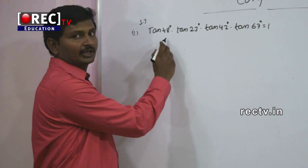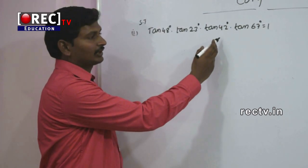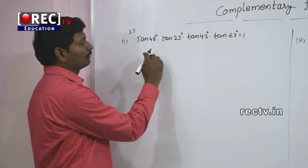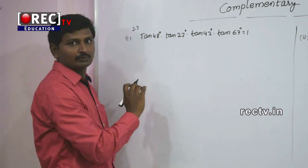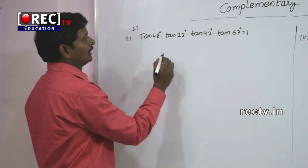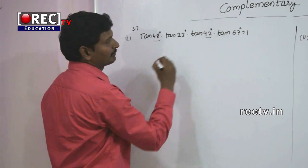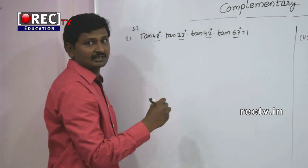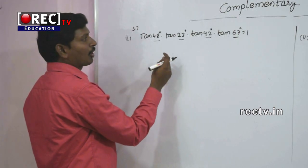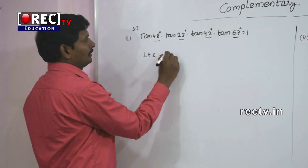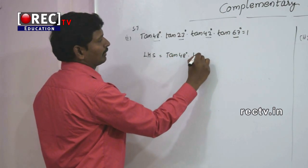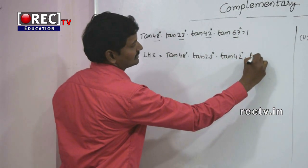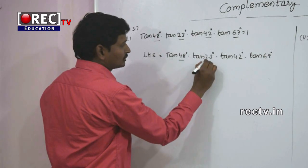Second question: show that tan48° × tan23° × tan42° × tan67° = 1. We observe that 48° + 42° = 90° and 23° + 67° = 90°, so we look for complementary pairs. We convert using complementary functions and leave tan48° and tan23° as they are.